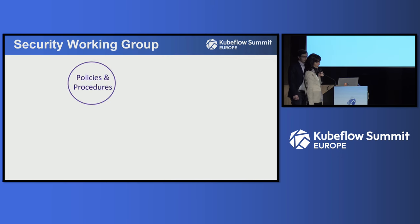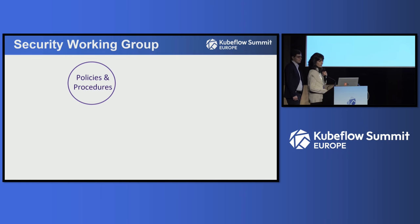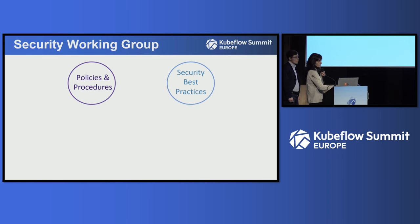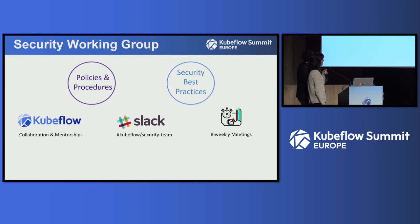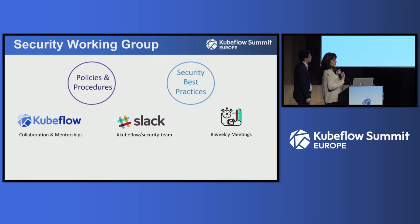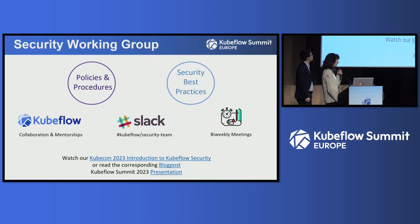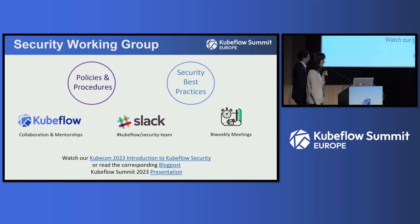For the last two releases, the Kubeflow project has a dedicated security working group whose main goals include defining clear policies and procedures on how to report and disclose vulnerabilities, and of course enforcing the use of security best practices across all working groups. We welcome new contributors, we offer mentorships, and here on this slide you can find useful links to our Slack and meeting minutes, so feel free to reach out to us. For more technical details, you can check out our previous KubeCon and Kubeflow Summit presentations.